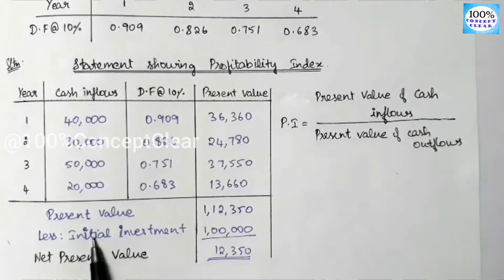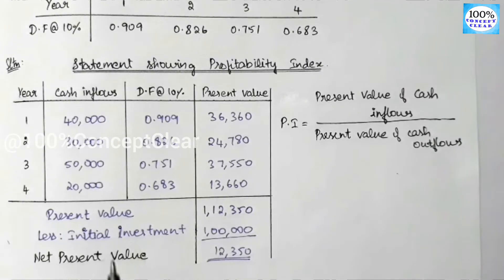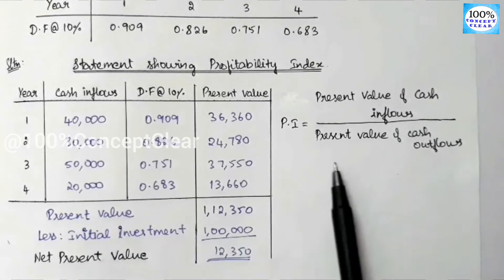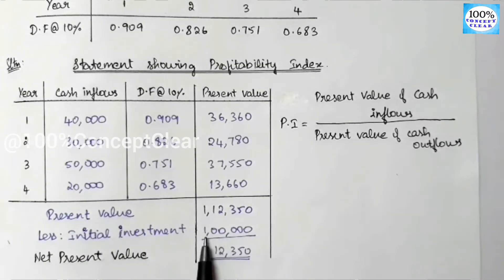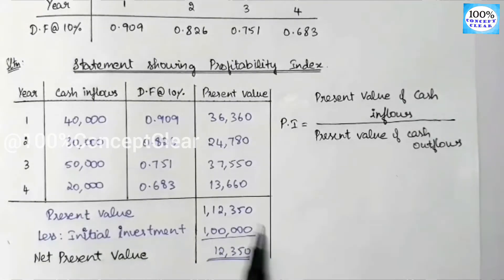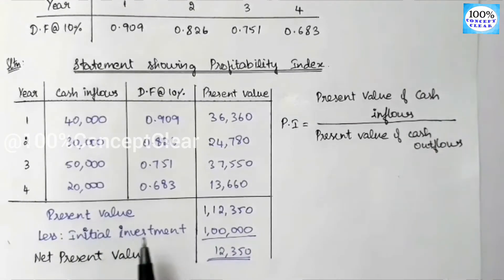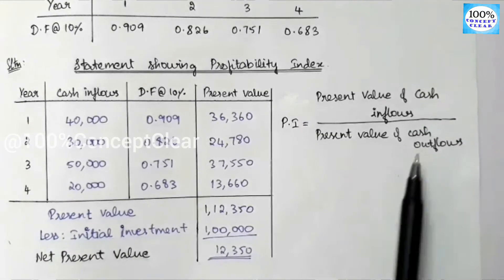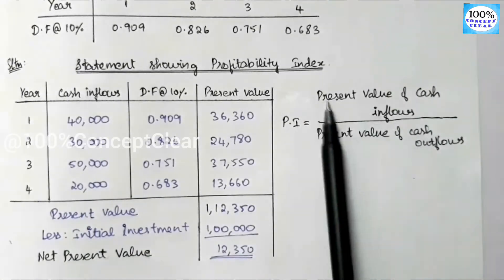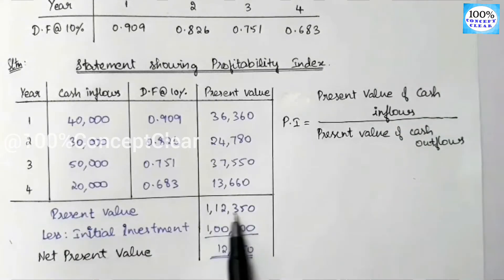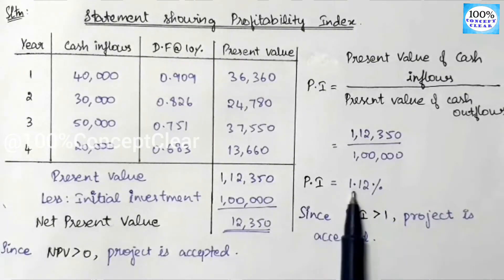Most of the time, the present value of cash outflows equals the initial investment amount. Substituting into the formula: PI = 1,12,350 divided by 1,00,000. So the Profitability Index is 1.12.